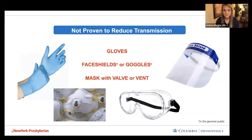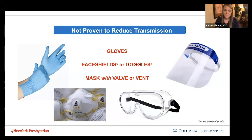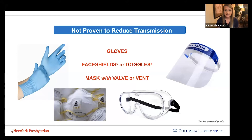Things not proven to reduce transmission for the general public include gloves — they are single-use and touching a surface then your face defeats the purpose. Face shields and goggles are not recommended for general public use, though they are helpful in hospital settings with intubated patients. Masks with valves or vents are not allowed even on airplanes, because they only filter incoming air and still push out all your germs.